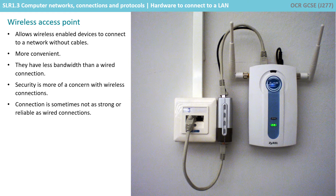A wireless access point allows wireless enabled devices to access the network without cables. This is clearly more convenient, although the bandwidth is often lower. Wireless access points on a larger local area network extend the range to different parts of a building and provide a wired connection back to a switch. On a home network, the wireless access point is also often a router and a switch. Security is more of a concern with these wireless connections.